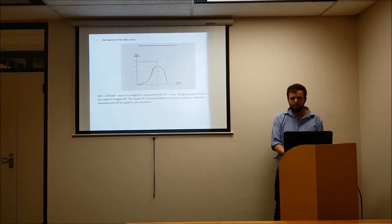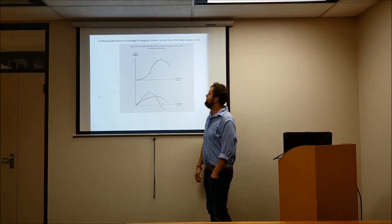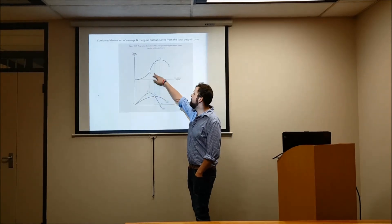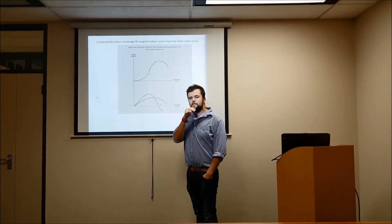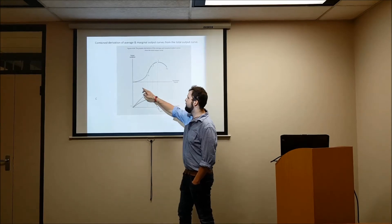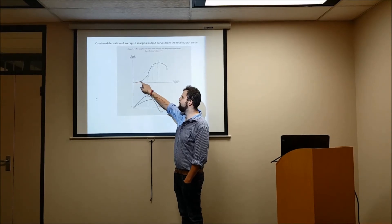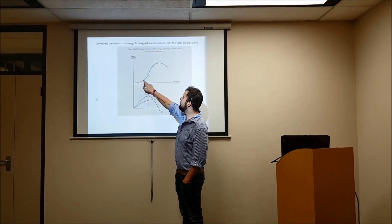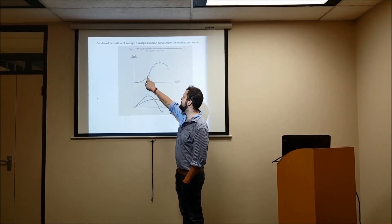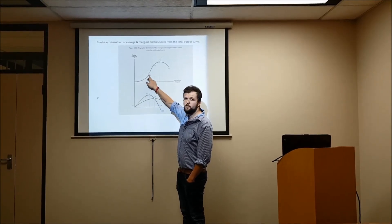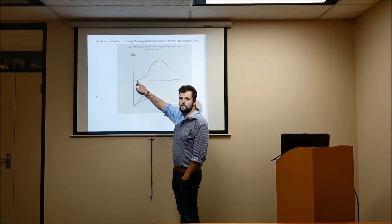So that covers the total output curve, the marginal output curve, and the average output curve. Let's put all three together now into one diagram. We have the total output curve on top, then the marginal output curve and the average output curve below. To recap: you're a firm — a restaurant — and as you employ more people, output increases. In this first section, adding more labour leads to a significant exponential increase in total output.